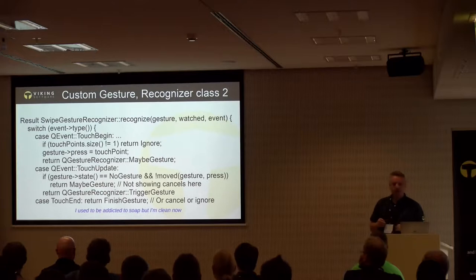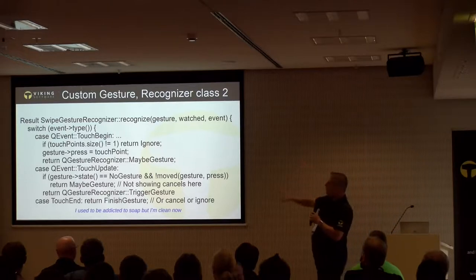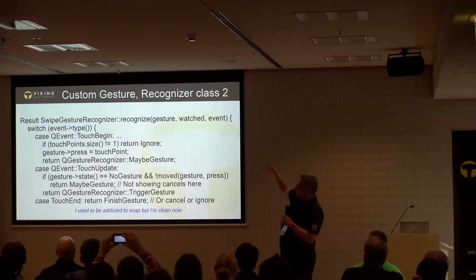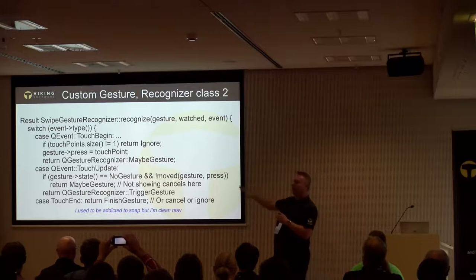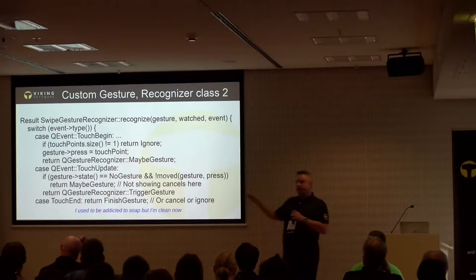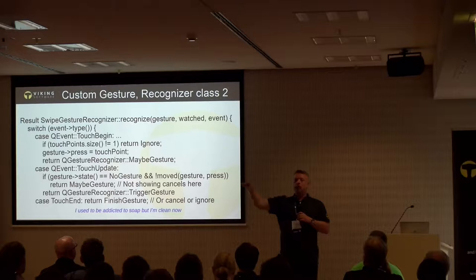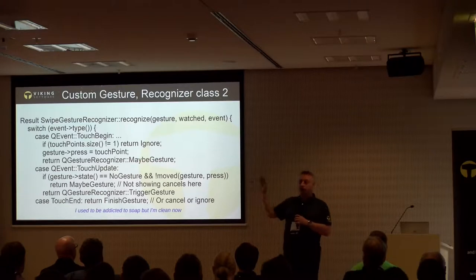The Recognizer class figures out whether you're actually performing a gesture or not — that's its only job. There's a lot of code and it can grow to three times what I've shown here, because it's full of if-else branches handling corner cases. For example: you were in a pinch, and then the user pressed a third finger — you have to handle all of those cases. It's a long list of if-else, and there's no way around that.